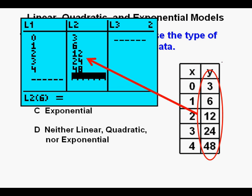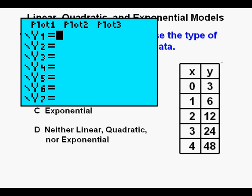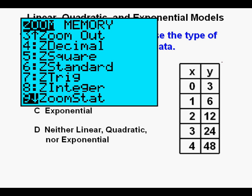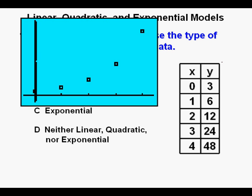We need to first take a good look at the points. Press the Y equals key at the upper left of the keypad. From here go to plot 1 and press ENTER so it's highlighted. Then press the ZOOM key at the center of the top row of the function keys. Scroll down to 9, ZOOM STAT. Press ENTER. Here we see the five points on the graph.